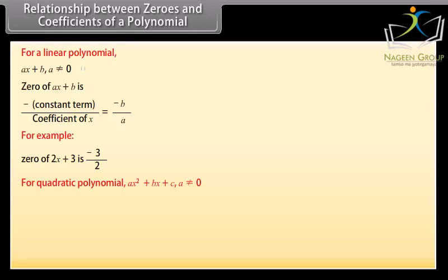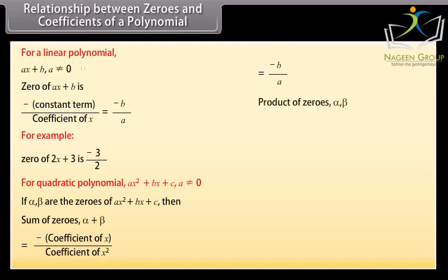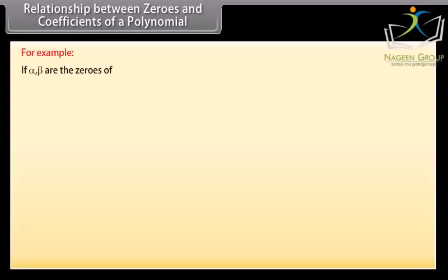For quadratic polynomial ax square plus bx plus c, where a is not equal to 0, if alpha and beta are the zeros, then sum of zeros alpha plus beta equals minus coefficient of x upon coefficient of x square, which equals minus b upon a. Product of zeros alpha times beta equals constant term upon coefficient of x square, which equals c upon a. For example, if alpha and beta are the zeros of 2x square plus 3x plus 2, then alpha plus beta equals minus 3 upon 2, and alpha times beta equals 2 upon 2, which equals 1.